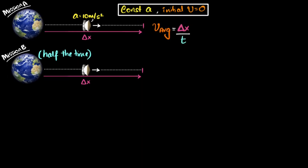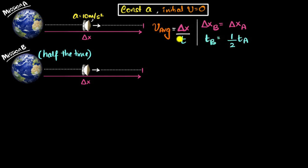We can use the model for average velocity: delta X divided by T. Let's see if this model is useful. We need to compare average velocity — good, that's there. Delta X for mission B is the same as for mission A, and we know the time for B is half the time for A. Since we know the relationships for both variables, we can use this model to find the relationship between the average velocities. If we had used a model involving acceleration, that wouldn't be useful since we don't know the relationship between accelerations. But if you pick a wrong model, just try another one — trial and error, no big deal.